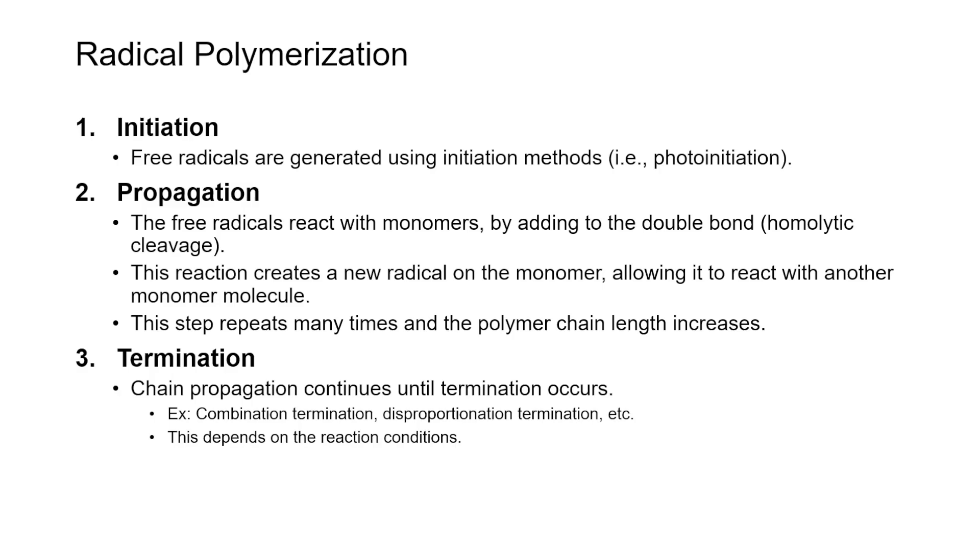The propagation phase involves these free radicals reacting with monomers. They will add to the double bond through homolytic cleavage, producing a new radical on the monomer, allowing it to react with another monomer molecule. This step will propagate—hence the name—and repeat many times as the polymer chain length increases.